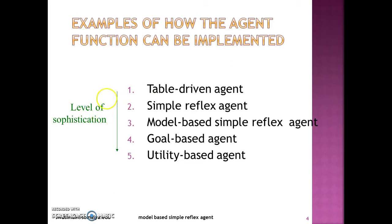As you may know, there are various intelligent agent architectures. The first one, not so intelligent, is table-driven architecture, then simple reflex, model-based simple reflex, model-based goal-based, and model-based utility-based agent architecture. As we move from table-driven to utility-based, the level of sophistication, complexity, and the efficiency and performance of the intelligent agent goes on improving.